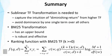So to summarize this lecture, the main point is that we need to do sublinear TF transformation. This is needed to capture the intuition of diminishing return from higher term counts. It's also to avoid dominance by one single term over all others. This BM25 transformation that we talked about is very interesting. It's so far one of the best performing TF transformation formulas. It has an upper bound and it's also robust and effective.